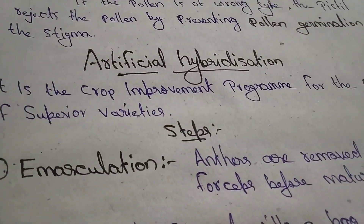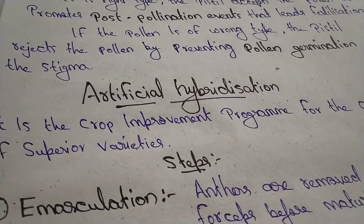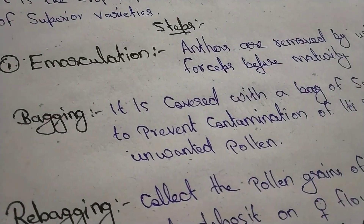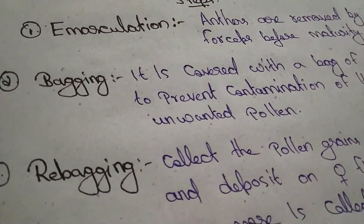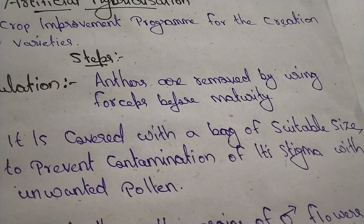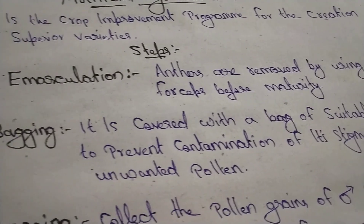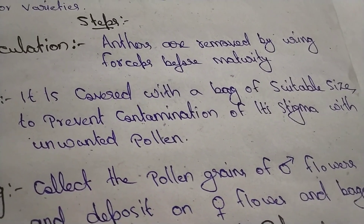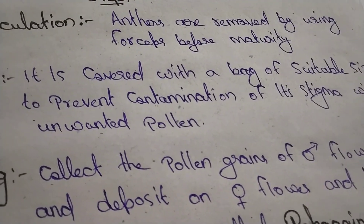You can improve your crop. This is artificial hybridization. There are three very important steps: emasculation, bagging, and rebagging. Emasculation — anthers are removed using forceps before maturity. Bagging — the flower is covered with a bag of suitable size to prevent contamination of its stigma with unwanted pollen.